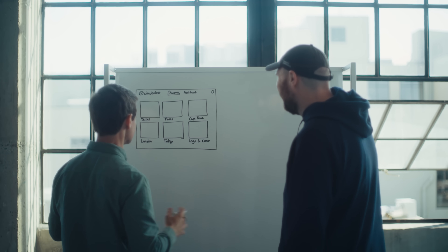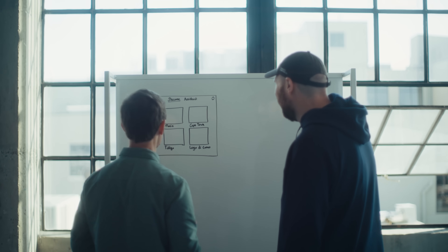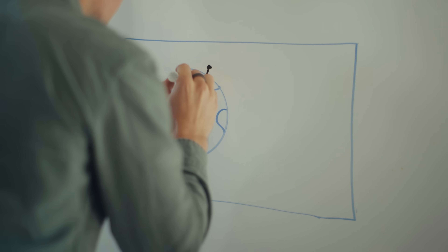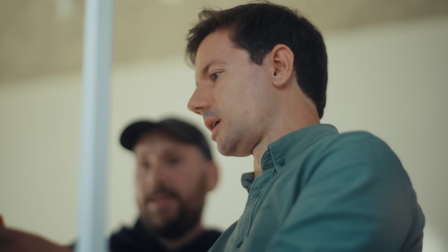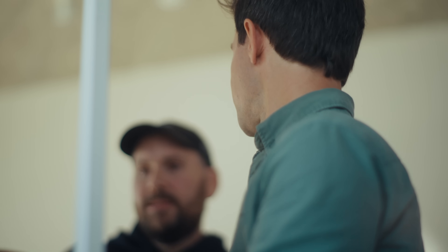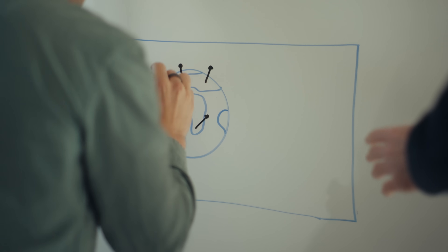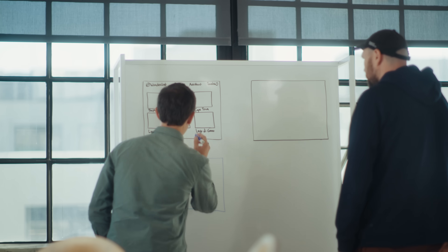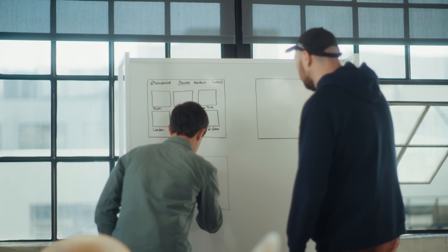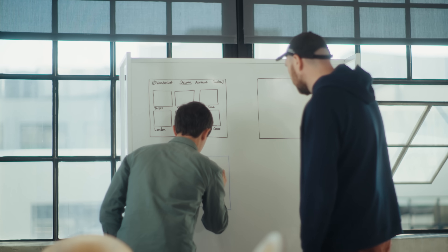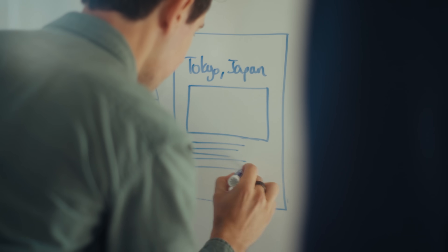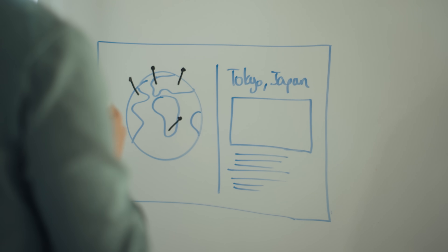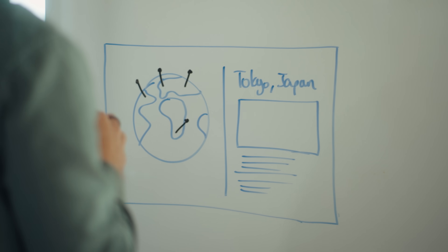We could have a 3D globe, and as the user spins the globe they could see the pins to explore. They could also navigate left and right, and see extra details for each of the cities — like Tokyo and all of the details that might be useful for the destination. I think that sounds like a good place to start.